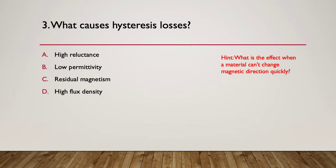Here's the hint. What is the effect when a material can't change its magnetic direction quickly? That's what hysteresis is. But what's happening when a magnetic material can't change its molecules magnetic direction easily and quickly? So the result is residual magnetism. Of course, it means that some of the molecules are left nicely aligned producing a very faint but residual magnetic field. So and that's what we call the hysteresis losses.